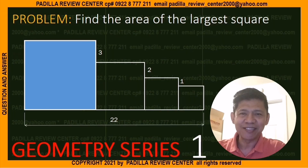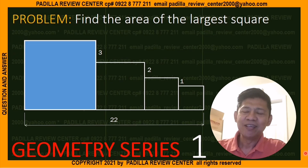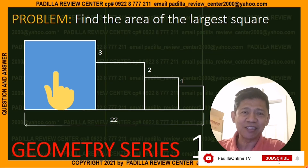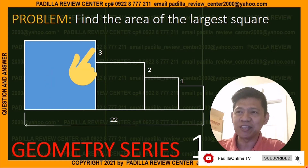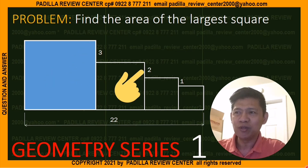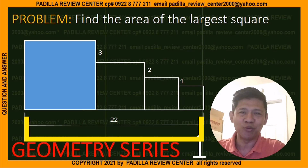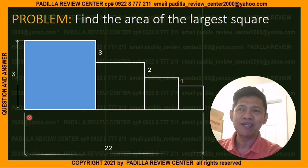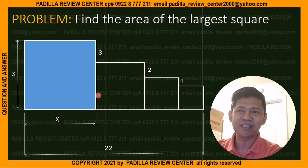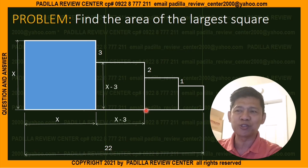Let us try solving this geometry problem. We are asked to find the area of the largest square. The given values are 3, 2, 1, and 22. We let the side of the largest square be x, so the other side is also x. Since this side is 3 and the full side is x, this segment must be x minus 3, and the opposite segment is also x minus 3.